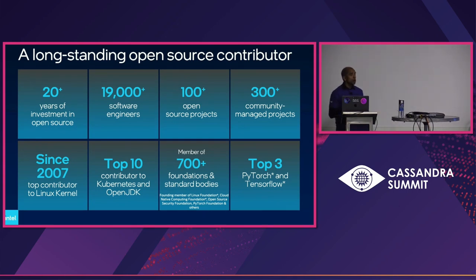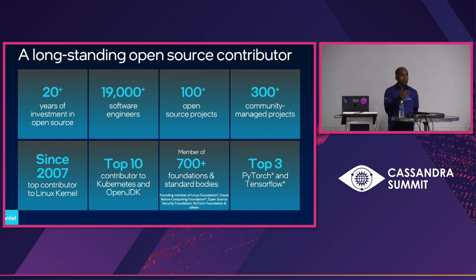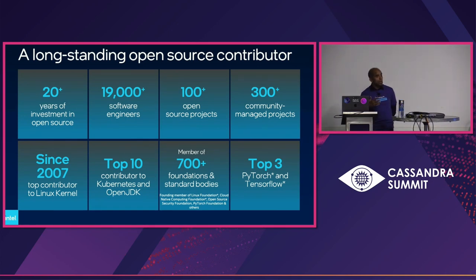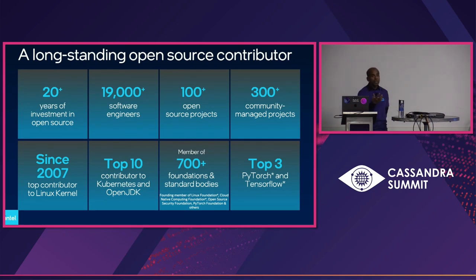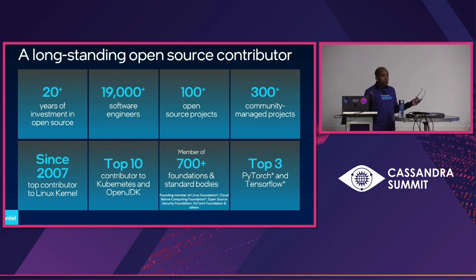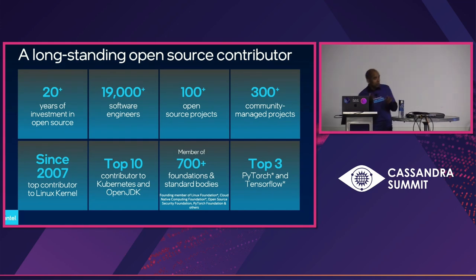As a result, we contribute to 300-plus open source projects. These are community-managed projects — projects like Kubernetes, OpenJDK, PyTorch, TensorFlow, Scikit-learn, LLVM, GCC, and the Linux kernel. These are projects where we are one of the largest contributors. Intel is the largest corporate contributor to the Linux kernel for over 15 years, because across hyperscalers, the commodity platform is Intel. We want to make sure all flavors of the underlying distribution — whether it's Canonical or Amazon Linux — work, and the best way to ensure that is contributing upstream so it flows downstream.